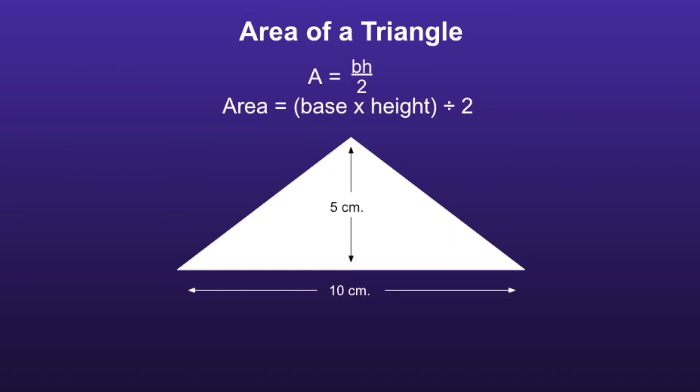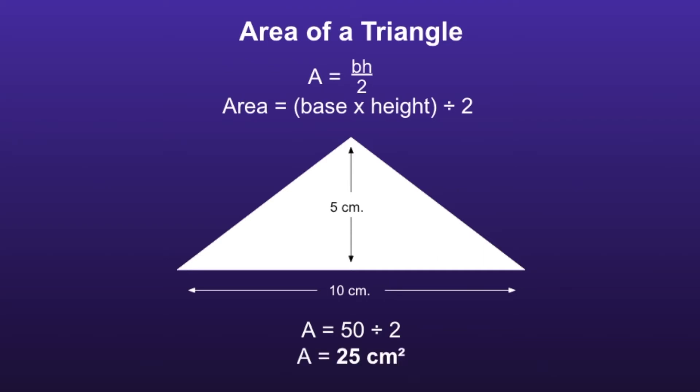So if we look at the triangle in the picture, we can write the equation A equals 10 times 5 divided by 2, because 10 is the base of the triangle and 5 is the height of the triangle. Since there are parentheses, we have to do the multiplication first. So 10 times 5 is equal to 50. Then we can divide by 2. 50 divided by 2 is equal to 25. So the area of the triangle on the screen would be 25 centimeters squared.